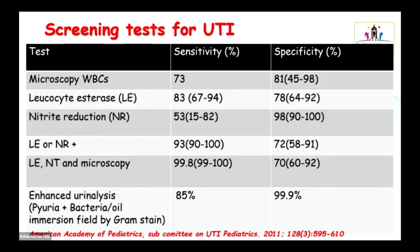Coming to the screening tests for urinary tract infection, we have microscopic examination to look for pyuria, and dipstick tests like leukocyte esterase test and nitrite reduction test. When you combine these tests with microscopy, sensitivity increases to 99.8% and specificity to 70%. Enhanced urine analysis — adding pyuria with gram staining — has the highest specificity of 99.9% and sensitivity of 85%. You can use these screening tests before getting urine culture and start the child on empirical antibiotic therapy.